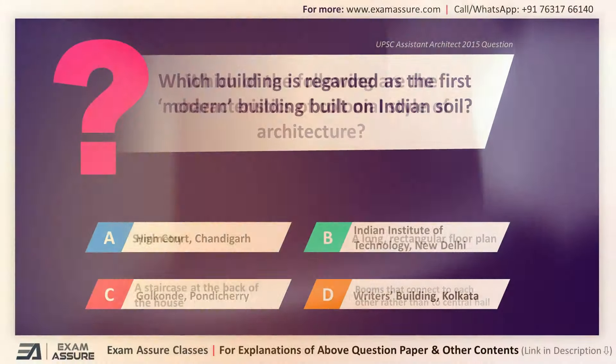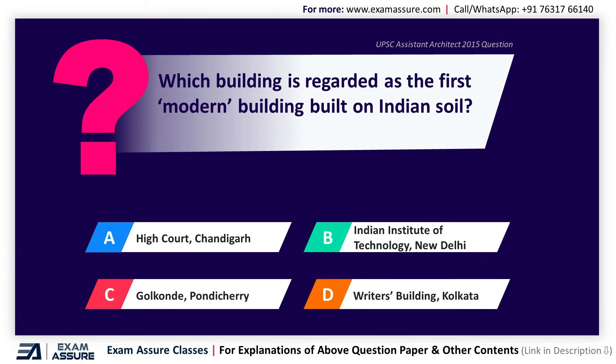Next question. Which building is regarded as the first modern building built on Indian soil? The correct answer is Option C, Golconde, Pondicherry.